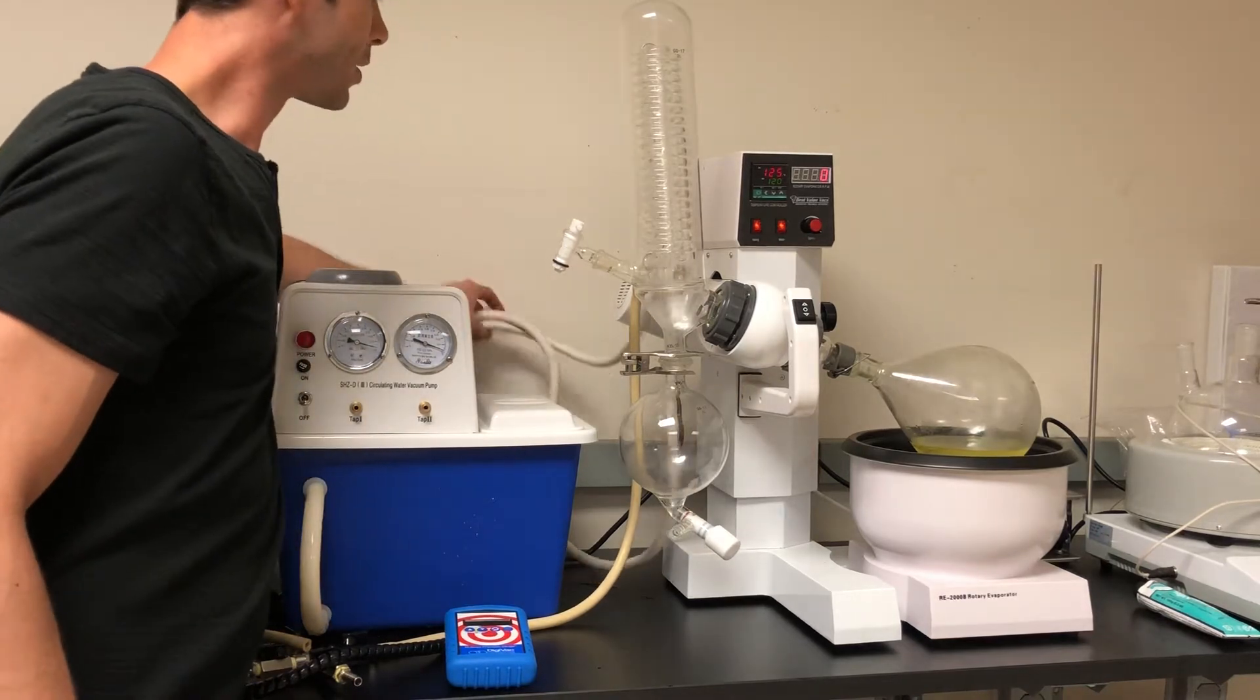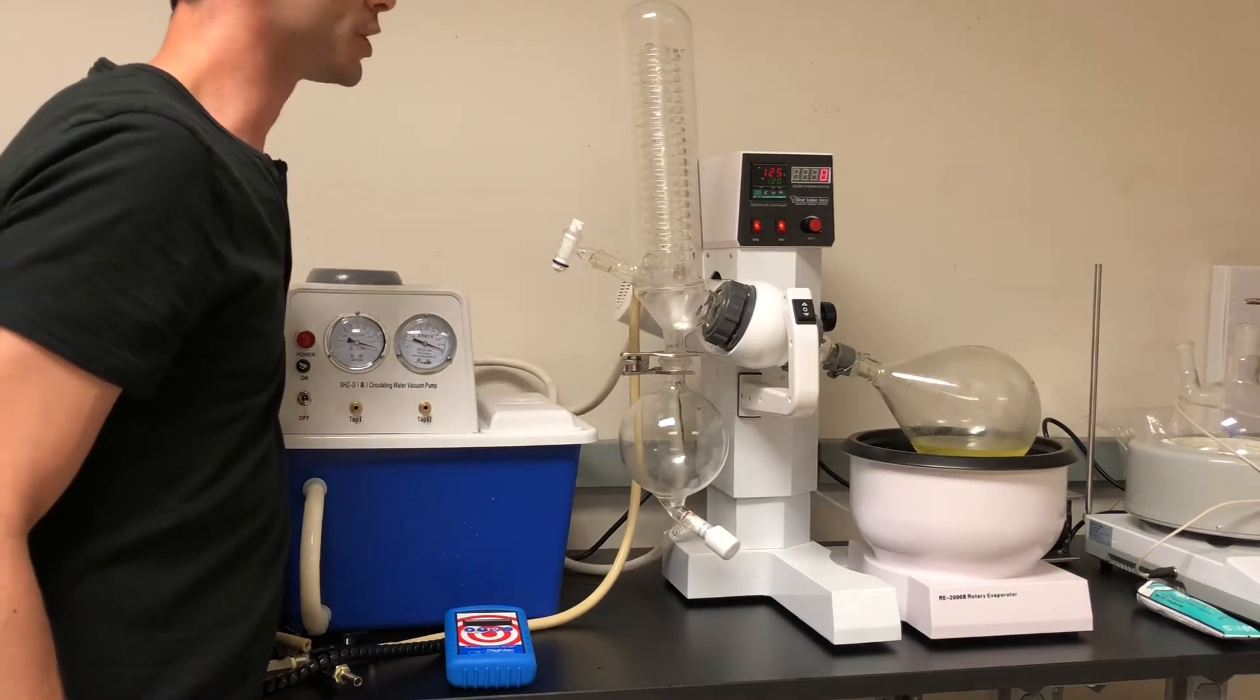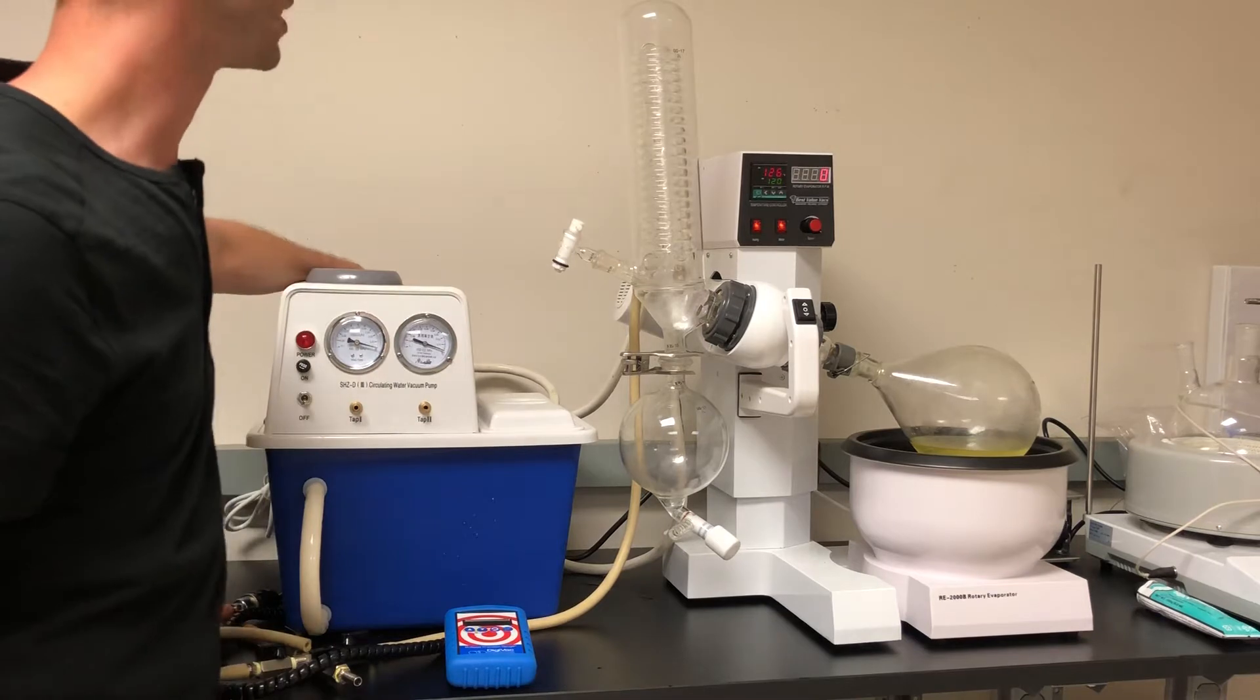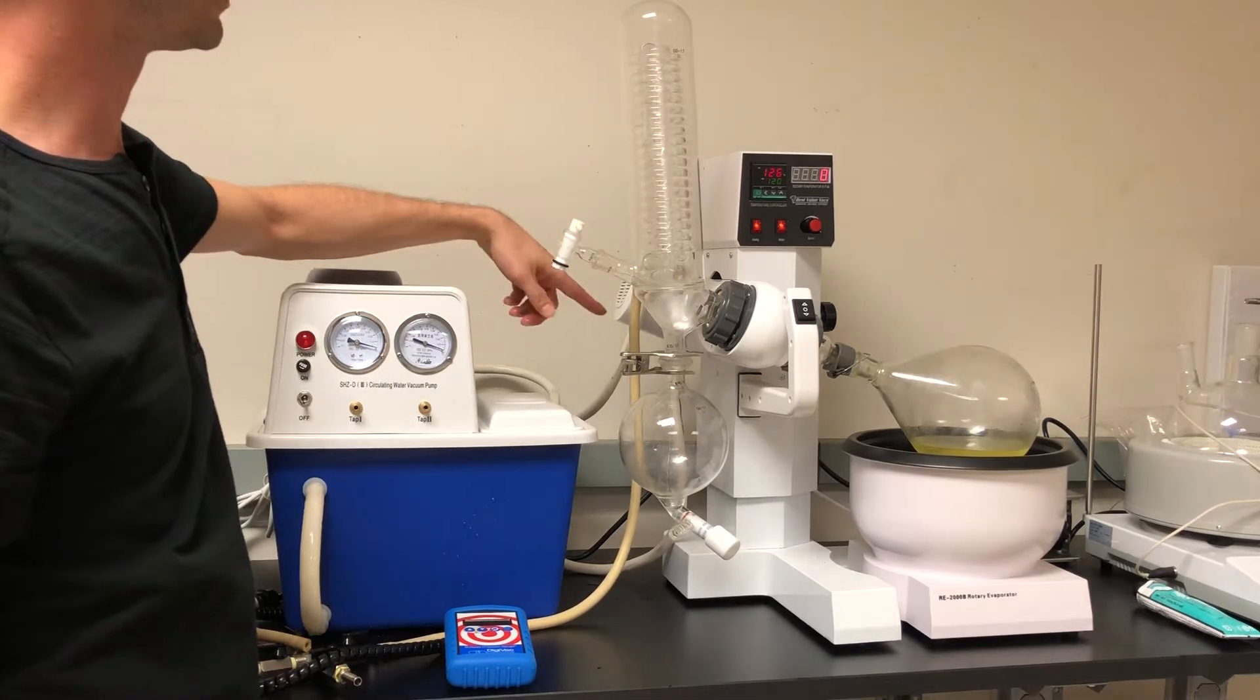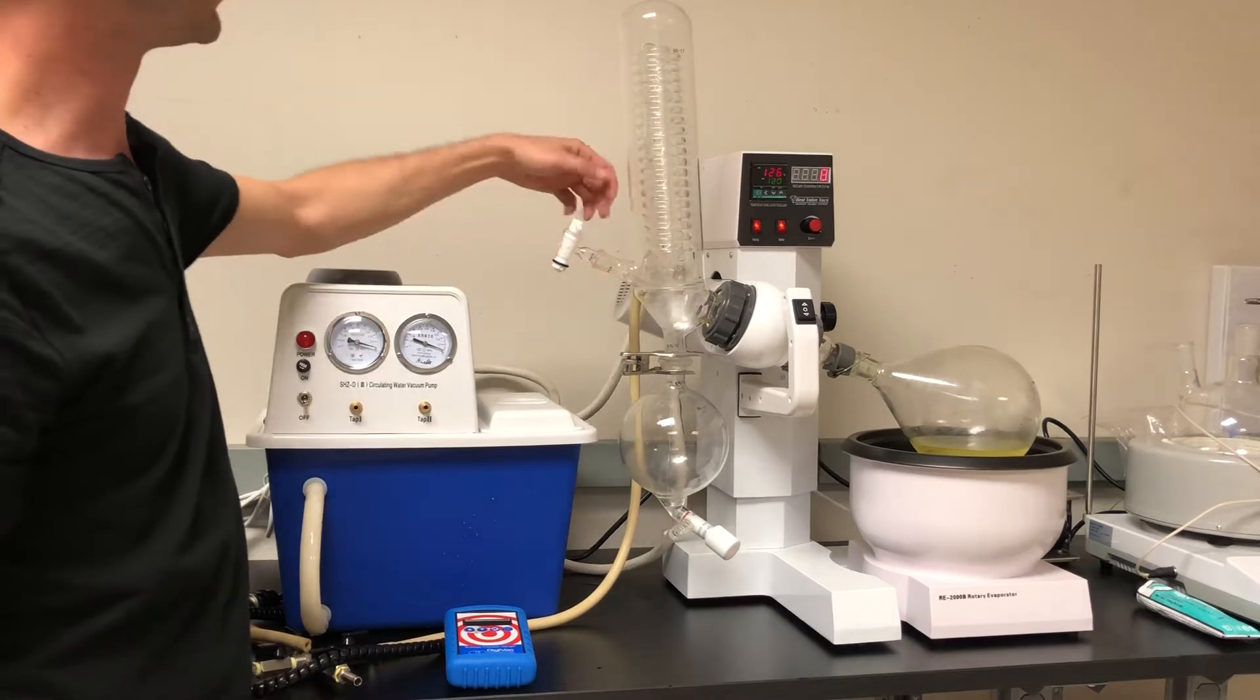It's got two hoses that are connected to the back here. It doesn't come with much hosing, it comes with a little bit, so you're gonna have to supply a little bit of your own tubing. But there's two fittings in the back, one that'll go to the top, the output, and the inlet that'll go to the bottom of your condenser.